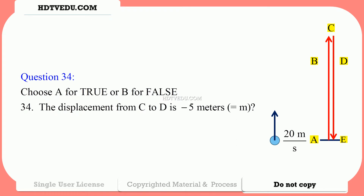Question 34. The displacement from C to D is negative 5 meters.